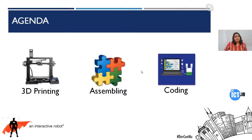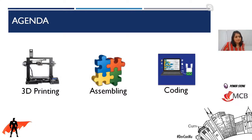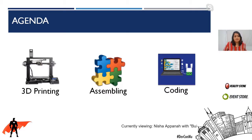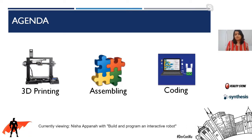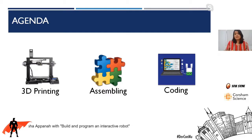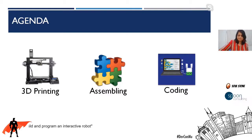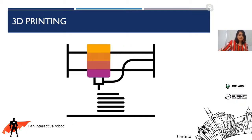First we'll cover the 3D printing part — I'll show you what components you have to download and print on your 3D printer. Then we'll go ahead and assemble all those different electronic components as well as the 3D printed parts. Finally we'll get into the coding part where you'll get to make your little robot move. The agenda is simple — just three items — and I hope you'll get all the steps. Let's get into the 3D printing.